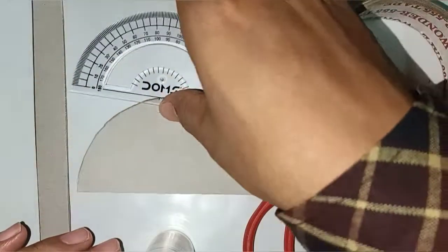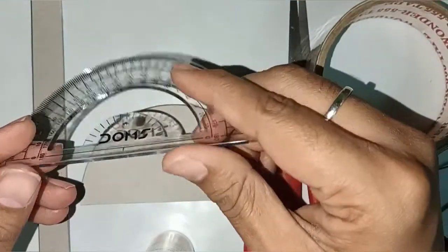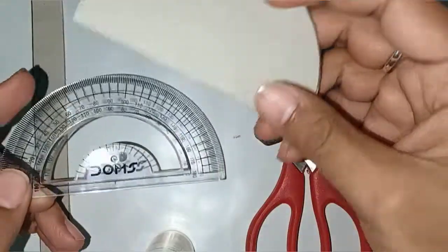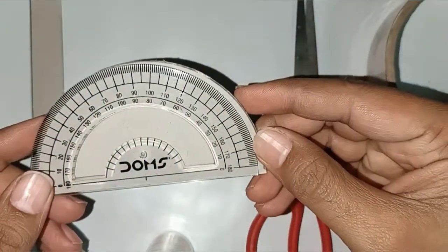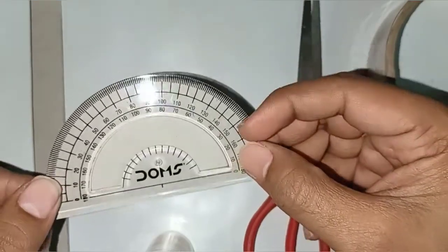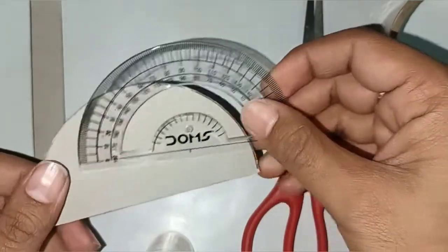First of all, we'll take a protractor and a piece of paper the same shape and size as the protractor. Now we're going to paste it here using glue.